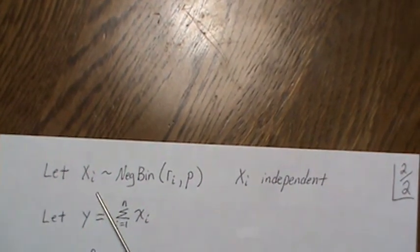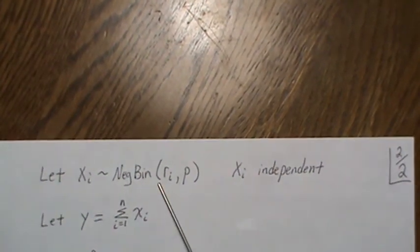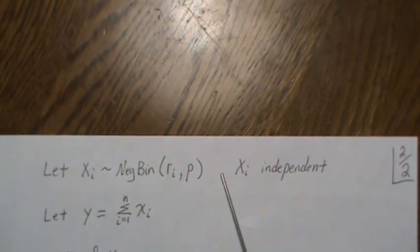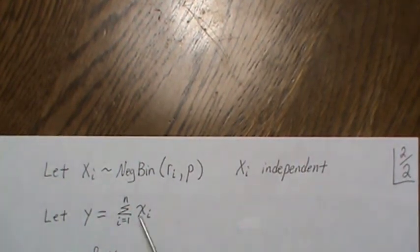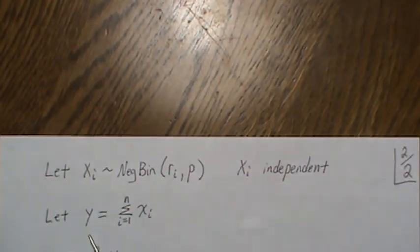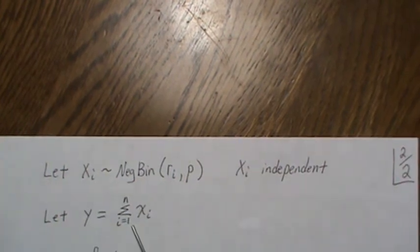Now let's let Xi be negative binomial RiP. Okay then of course the Xi are independent. We want to find the distribution for Y which is the sum of these XIs.